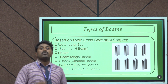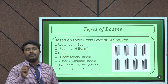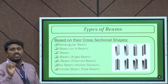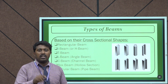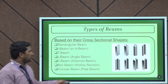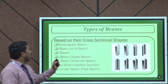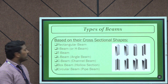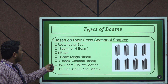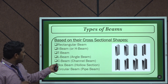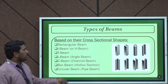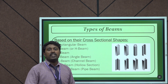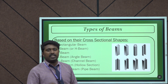Next, we will discuss the different types of beams. Beams are classified based on different categories. The first category is based on their cross-sectional area. Based on cross-sectional area, beams are classified into several types: rectangular beam, I-beam or H-beam, T-beam, L-beam, C-beam, box beam, and circular beam. The image shown here illustrates the different kinds of beams based on their cross-sectional area.